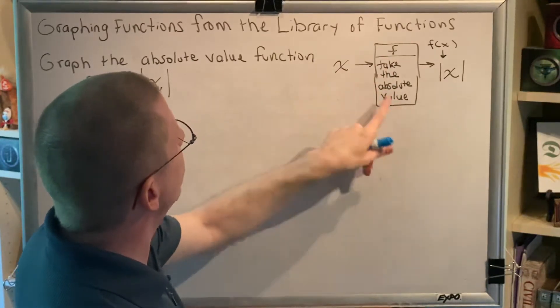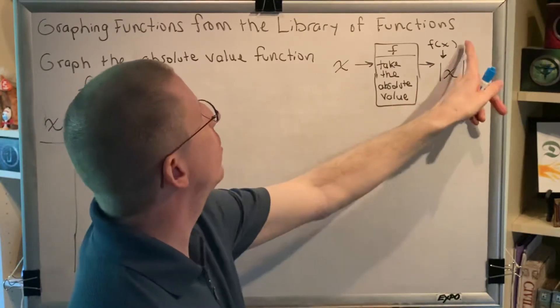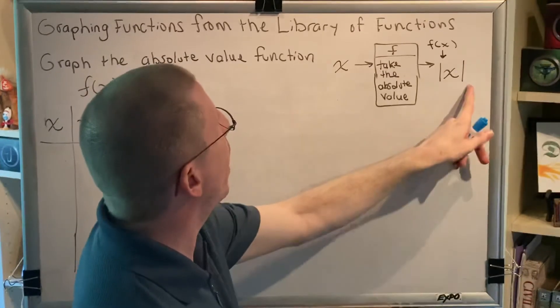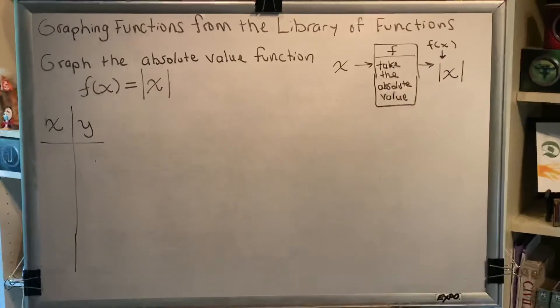So if you start with x and you take the absolute value, what comes out is the absolute value of x. And since the thing that comes out is called f(x), we get f(x) equals the absolute value of x. So this is a pretty simple idea.